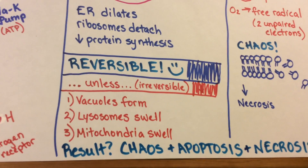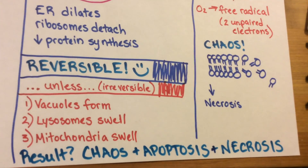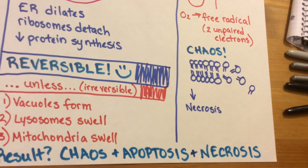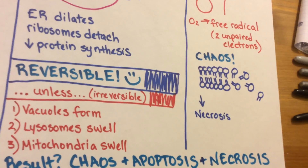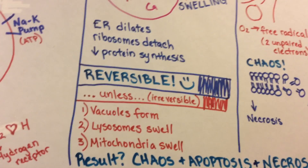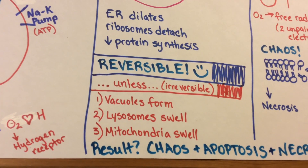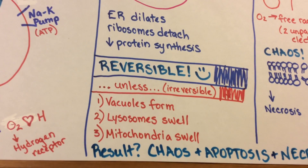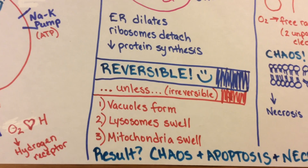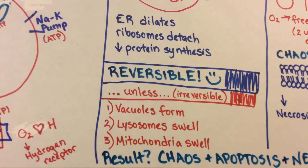The result of irreversible damage is major chaos within the cell, which eventually leads to apoptosis and necrosis — apoptosis being programmed cell death and necrosis being premature cell death. Remember: irreversible damage doesn't occur until the cell membrane is compromised and swollen, the lysosomes are swollen, the mitochondria are swollen, and vacuoles have started to form.